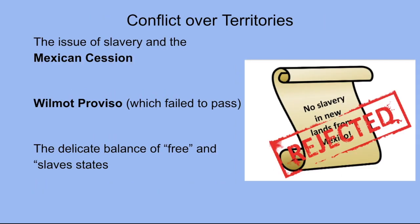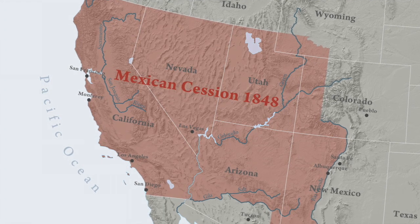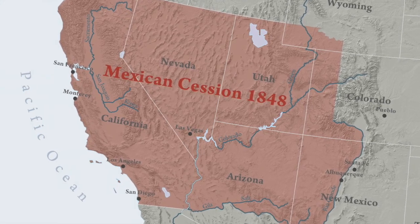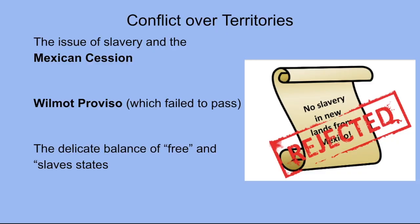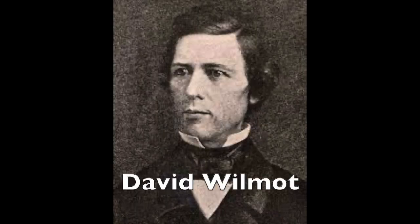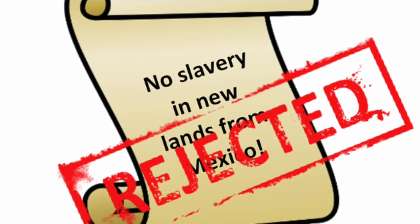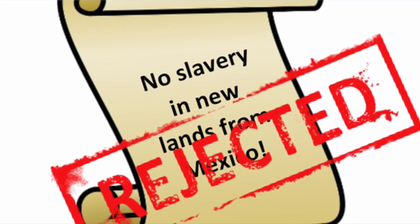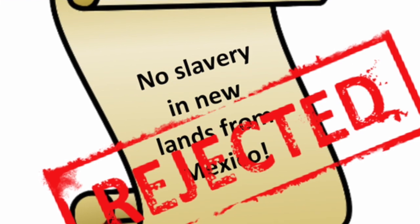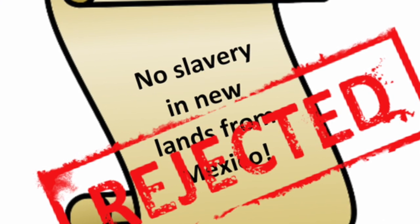Conflict over the status of new territories: the issue of slavery in the territories gained in the Mexican War became the focus of sectional differences in the late 1840s. The Wilmot Proviso, which excluded slavery from the new territories, would have upset the Compromise of 1820 and the delicate balance between 15 free states and 15 slave states. David Wilmot, the sponsor of the Proviso, was from Pennsylvania and was a Free Soiler. The Wilmot Proviso passed the House several times but was defeated in the Senate and never actually became official policy. Its defeat only intensified regional differences.